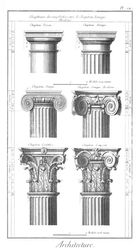Pycnostyle: term given by Vitruvius to the intercolumniation between the columns of a temple when this was equal to one and a half diameters.